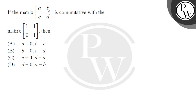Hello. I am going to see if matrix A, B, C, D is commutative with the matrix [1, 1; 0, 1]. So if we compare them, then A is 1, D is 1, B is 1, and C is 0.